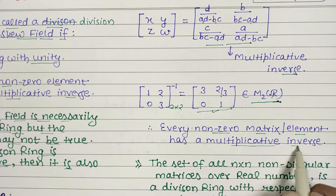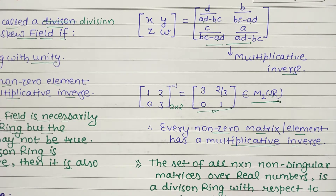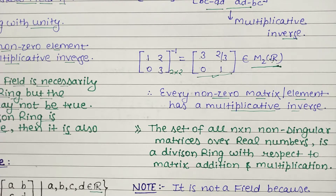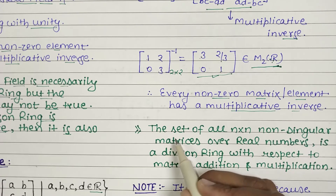So every non-zero matrix has a multiplicative inverse. We see that M₂(ℝ) is a ring with unity, and each of its non-zero elements has a multiplicative inverse — so this 2×2 matrix set over real numbers with standard addition and multiplication forms a skew field. Now generalizing: for 3×3, 4×4, up to n×n, the same results apply.